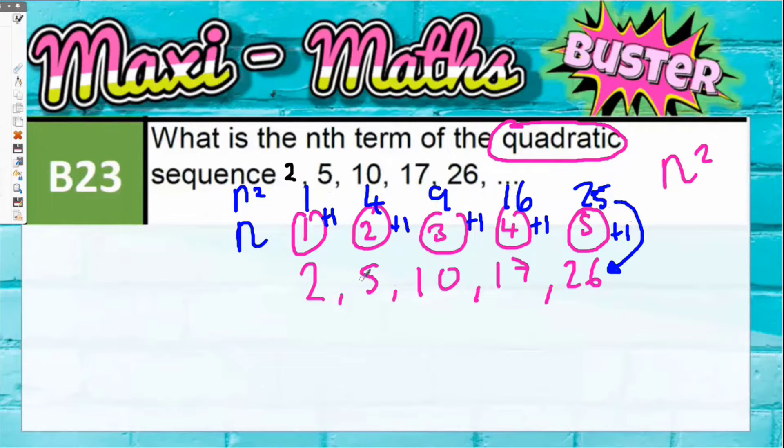All you've got to do is square the position number and then add 1. Therefore, the nth term is n squared plus 1.